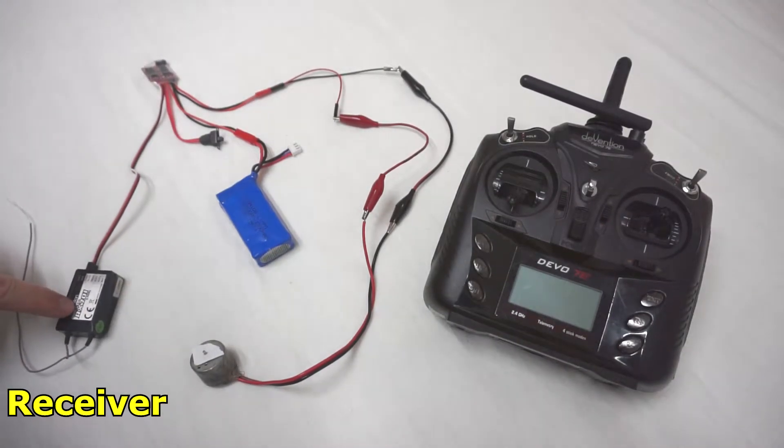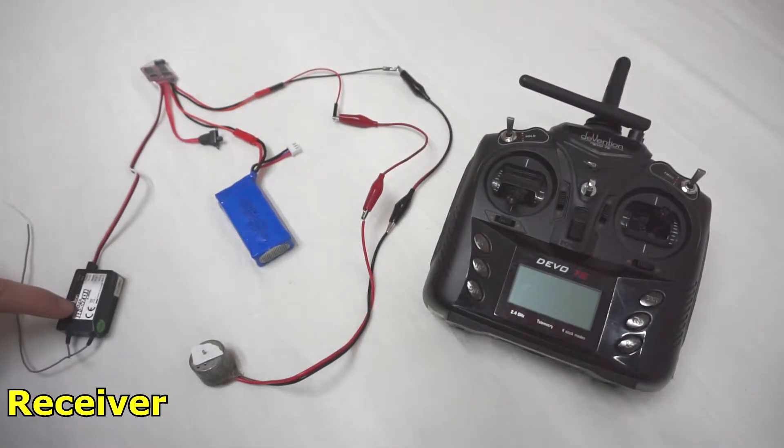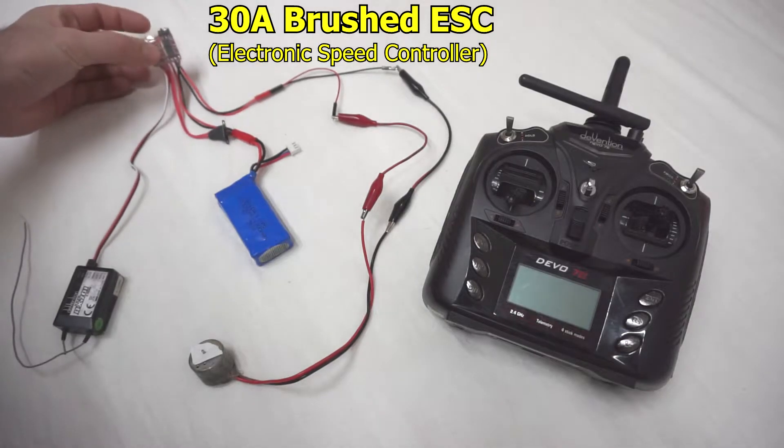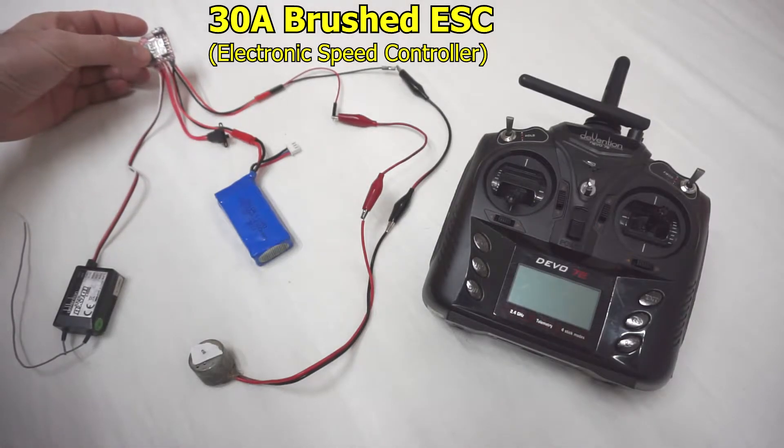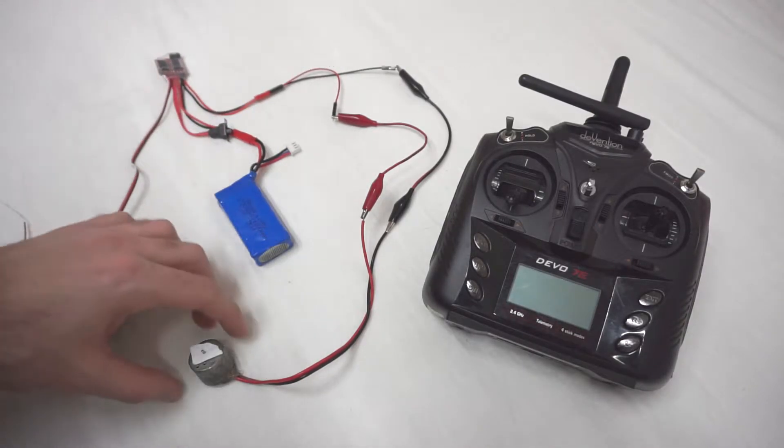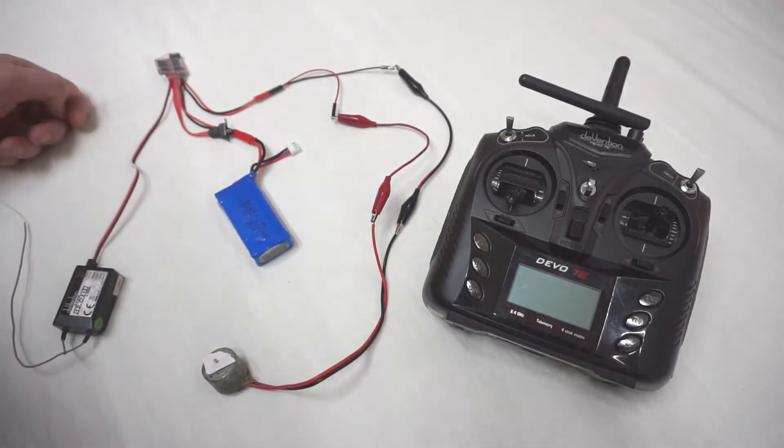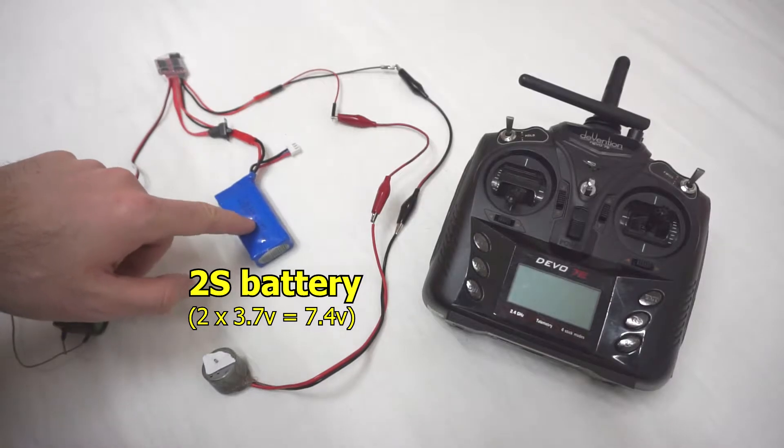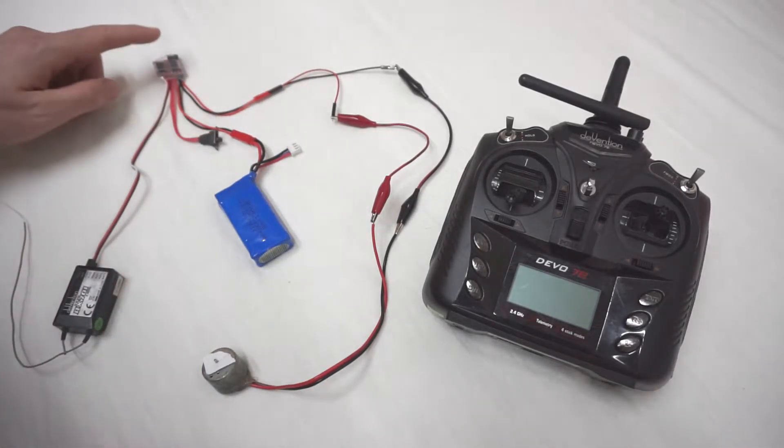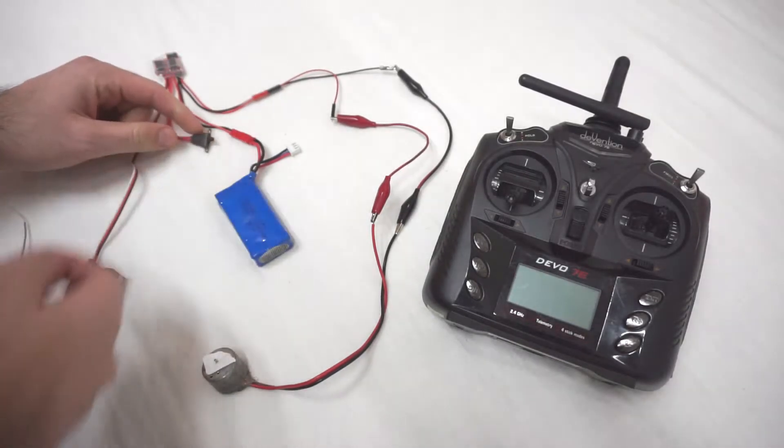Here is the RX701 receiver. Here's an ESC, electronic speed controller for brushed motors. That's a brushed motor. It has only two wires, not three. And a two-cell lipo. And the ESC has a switch also.